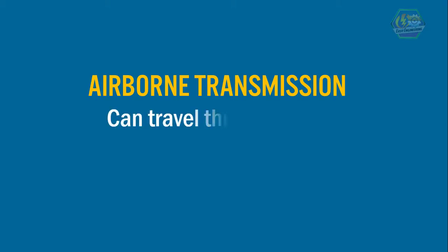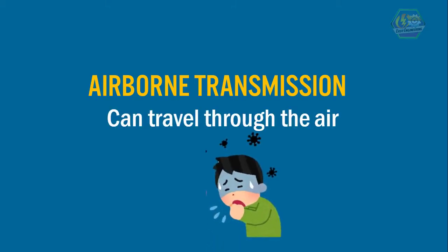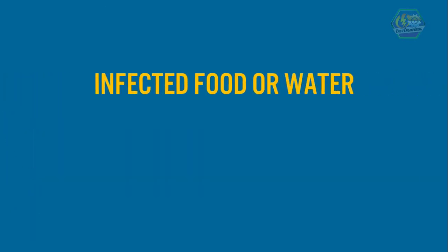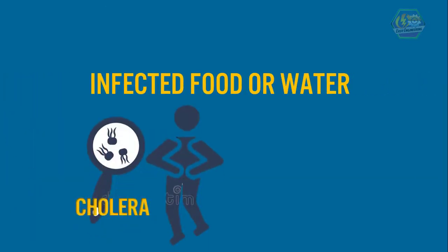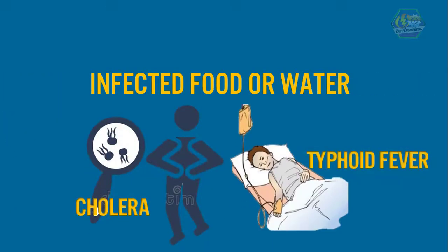Diseases can also be spread through airborne transmission — infections can travel through the air, especially when a person coughs or sneezes. An example of an airborne disease is influenza. And lastly, some diseases can be spread through infected food or water, including diseases like cholera and typhoid fever.